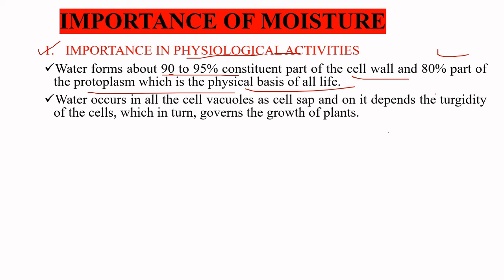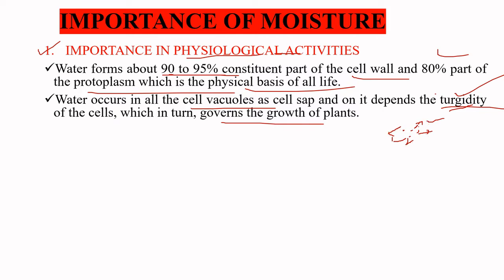Water occurs in the cell vacuoles as cell sap, and on it depends the turgidity of the cell, which in turn governs plant growth. Turgidity is the process by which the water molecules present inside the cell exert pressure on the cell wall, causing the cell to maintain its shape. Water plays a very important role in the process of turgidity, and as a result, it governs plant growth.